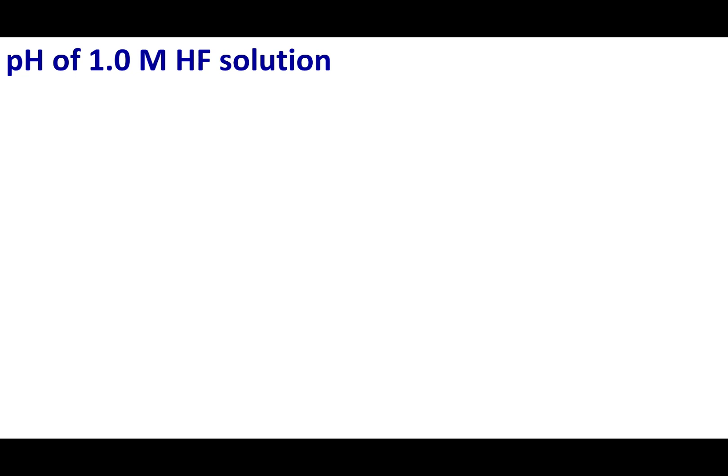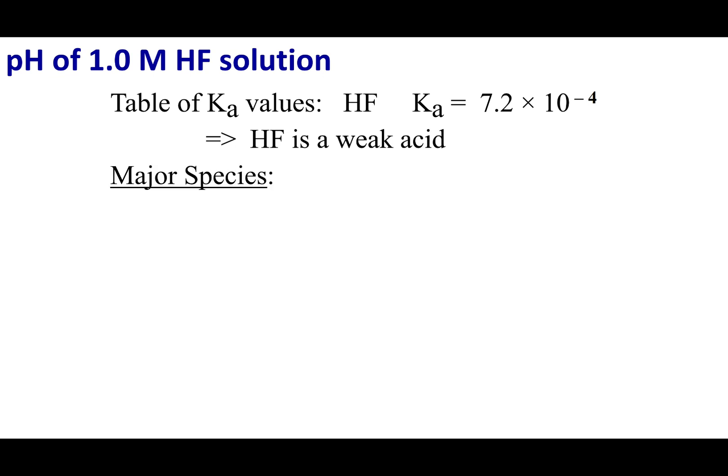I just have a weak acid in solution. We're going to look up the Ka of HF. Ka is 7.2 times 10 to the negative fourth. This makes sense because HF is a weak acid. I can identify the major species in solution, and that's going to be HF itself because it doesn't break up, and water as well.